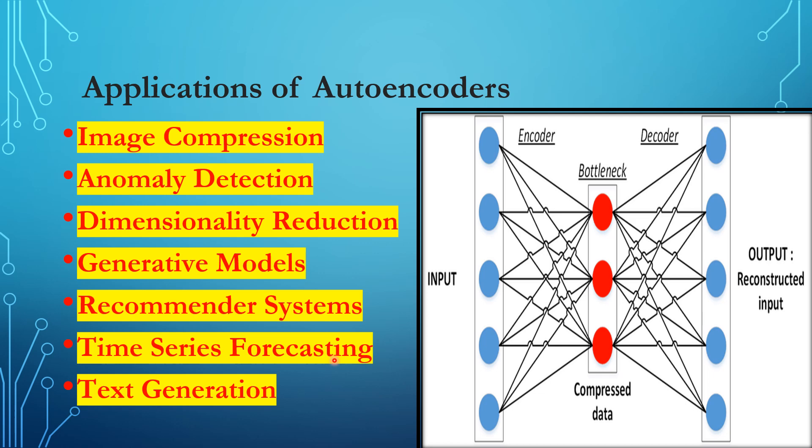These are just a few examples of the many applications of autoencoders. Their ability to identify essential features, compress data, and reconstruct information makes them a versatile tool for various fields, including computer vision, natural language processing, and signal processing.